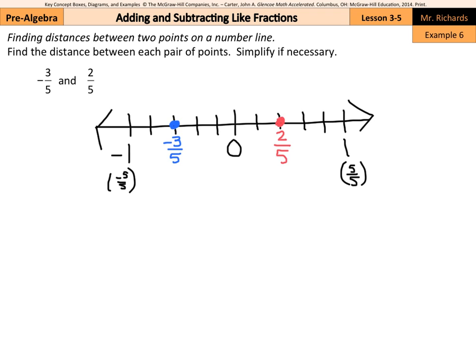And this method literally wants us to count how many spaces do I have in between our negative 3 fifths and our 2 fifths. Well, 1, 2, 3, 4, 5. I have 5 parts.